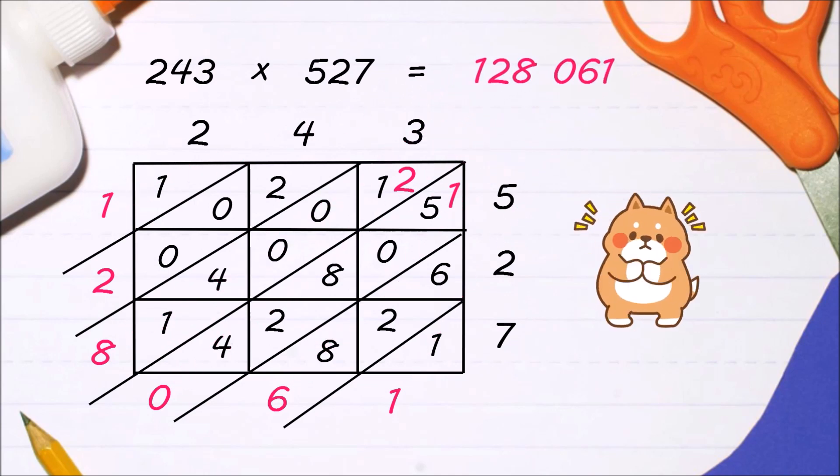Therefore, the product of 243 and 527 is 128,061.